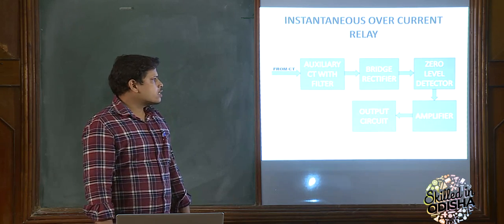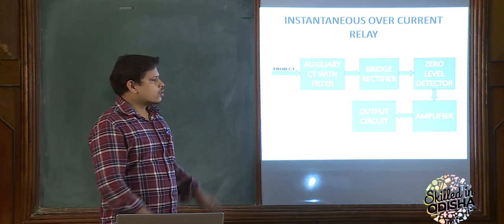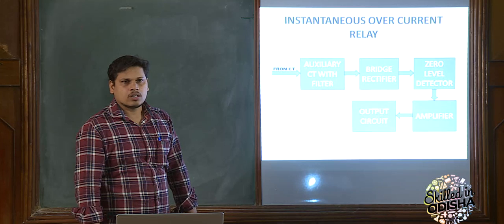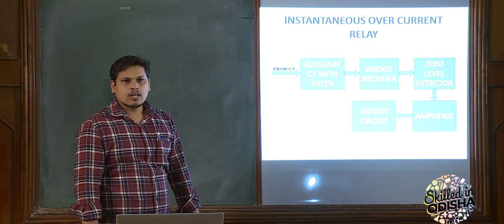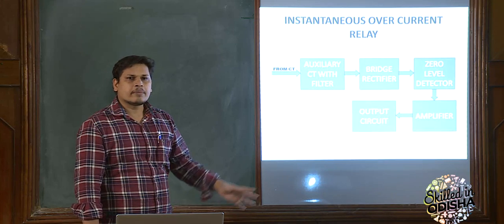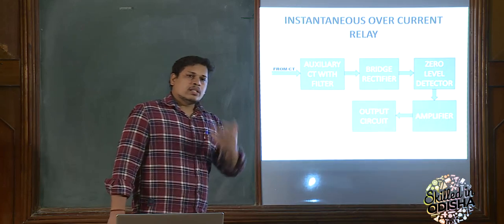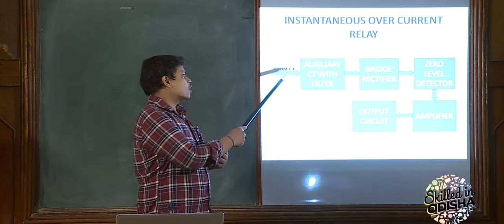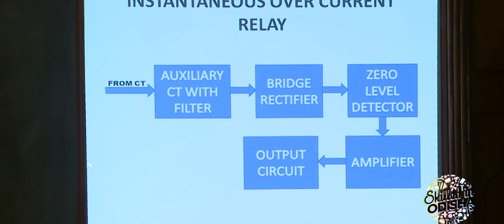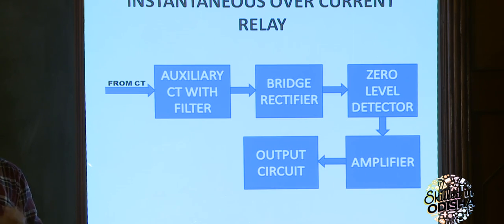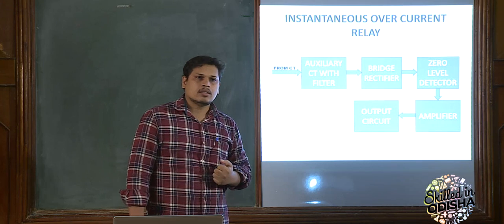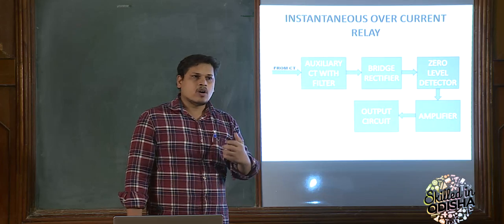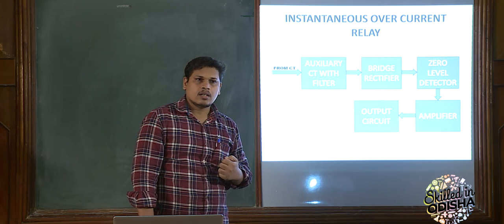The whole function of this relay is to sense the fault — whether there is a fault or not. If there is a fault, the relay will sense it and direct the circuit breaker or tripping circuit to operate. This measurement is done by the current transformer. The output is given to an auxiliary CT, which is an additional current transformer connected with a filter to help measure the accurate value of current. The pickup value current — at what current it should decide there is a fault — is set by tappings provided on the auxiliary CT.